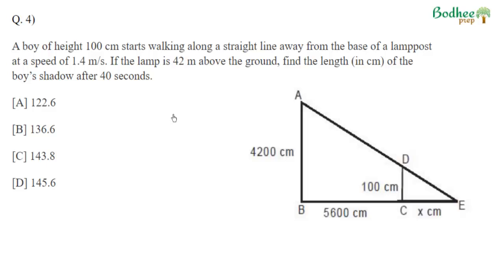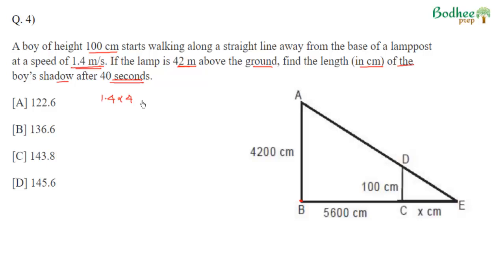The fourth question: a boy of height 100 cm walks away from the base of a lamp post at 1.4 m/s. The lamp is 42 m above the ground. We need the length of the boy's shadow after 40 seconds. Everything is converted to centimeters — 42 m becomes 4200 cm. In 40 seconds, the boy moves 1.4 × 40 = 56 m, which is 5600 cm.